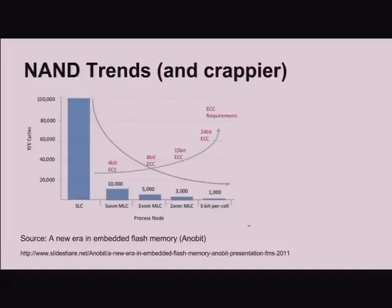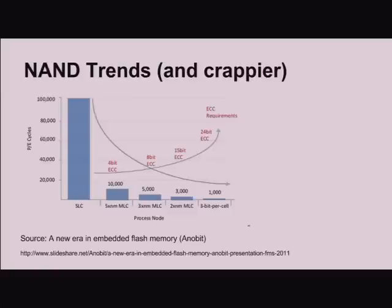SLC has a lot of P/E cycles and almost no ECC — you need just one bit of error correction. One of the things about NAND is when we look at each cell there's a small chance it'll make an error, and based on that error rate the manufacturers say you need to have this many bits of error correction. These are successively newer technologies, and the ECC requirements are going up rather substantially — 24 bits of ECC is a lot. And even doing that, the endurance is much lower. Whether it's 1K or 300 P/E cycles depends on which model of TLC you're looking at.